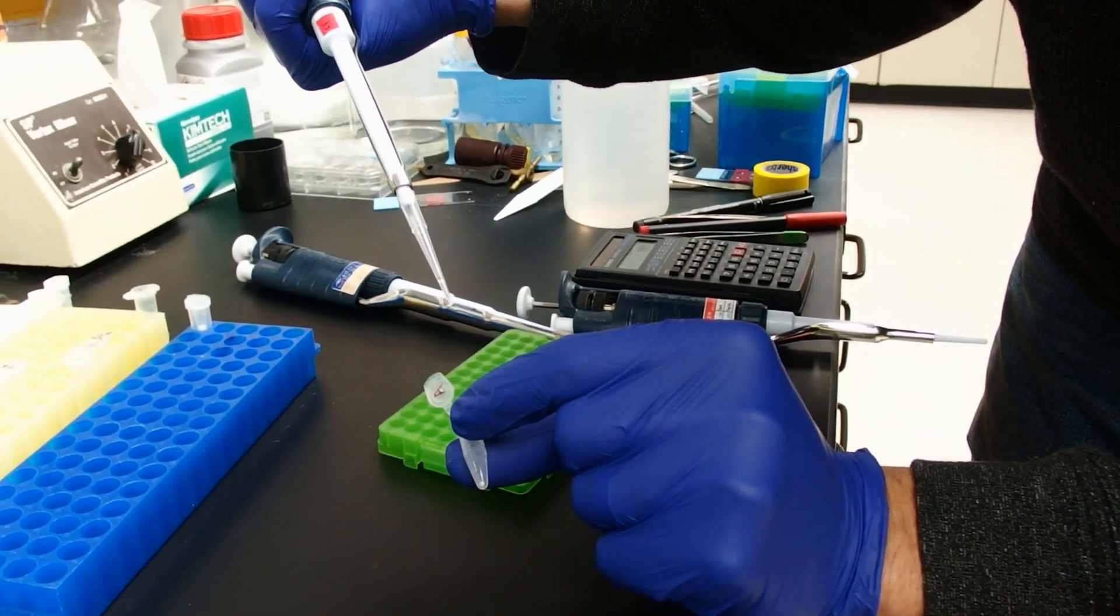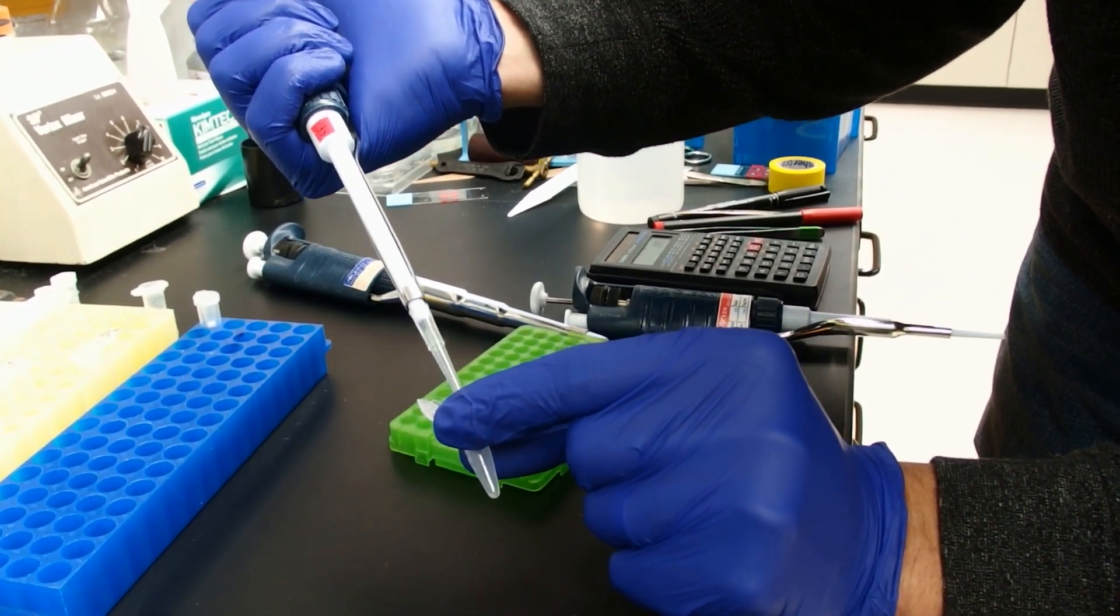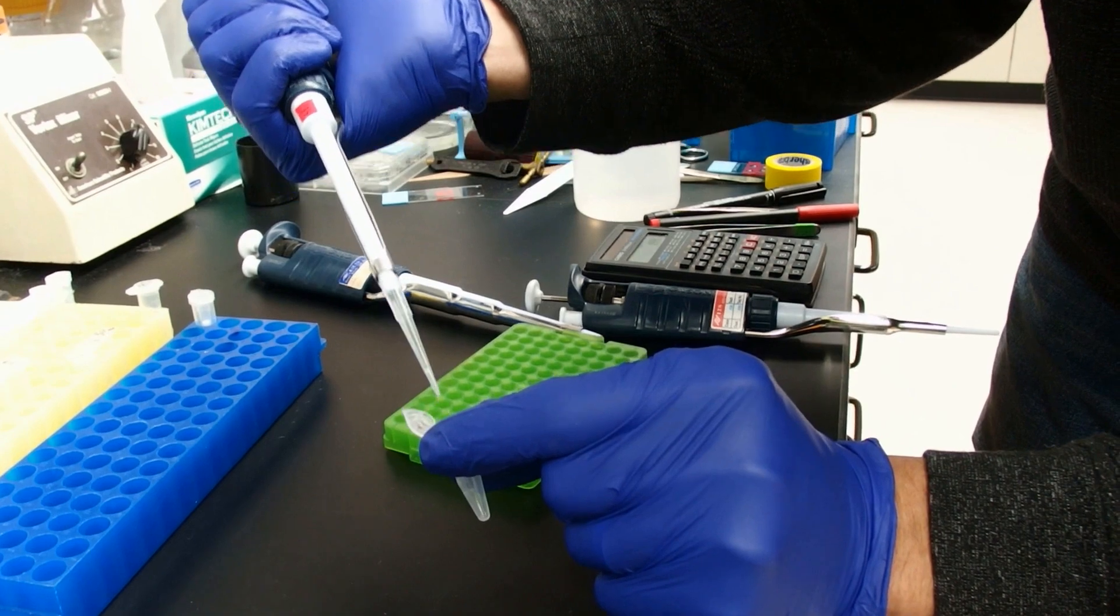And make sure all the ethanol is out. If you have any droplets on the side of the tube, you can use the pipette tip to gently move them toward the top of the tube, toward the mouth of the tube.